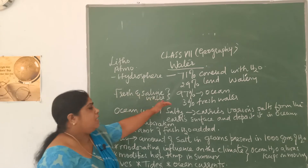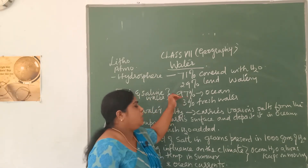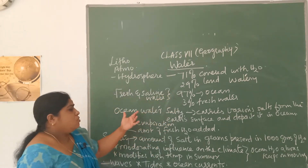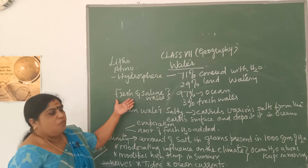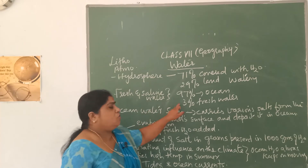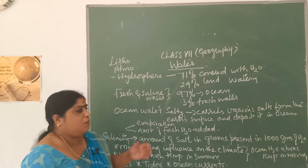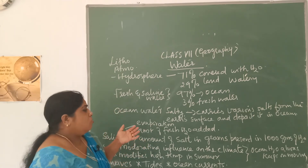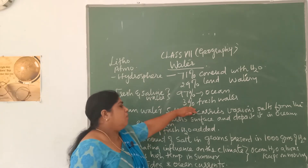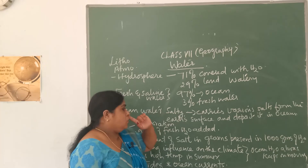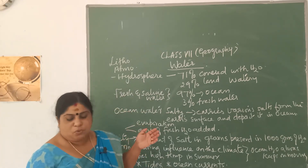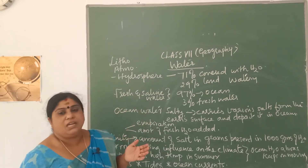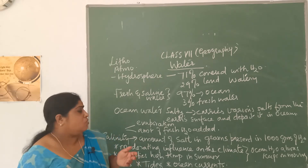97% of the water on earth comprises saline water, which cannot be used in our daily life. Only 3% comprises fresh water. From these figures, you will understand that the amount of fresh water is very much limited and there is no other source from where we are getting water. So it is a must that we preserve and conserve this fresh water resource, because if we contaminate fresh water, there will be no water for daily existence.